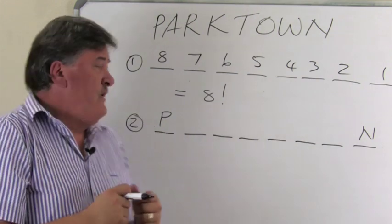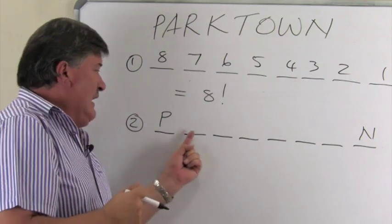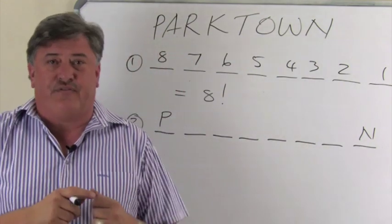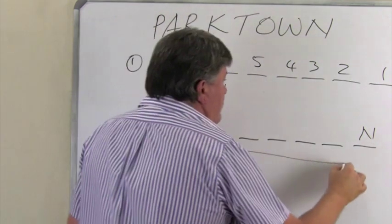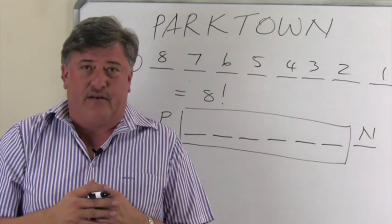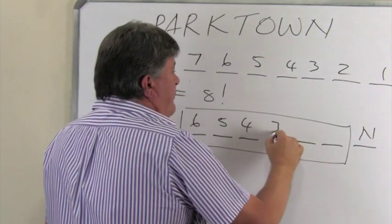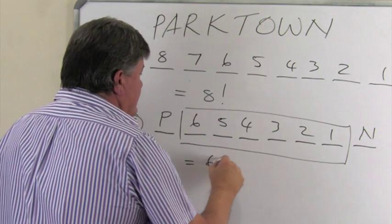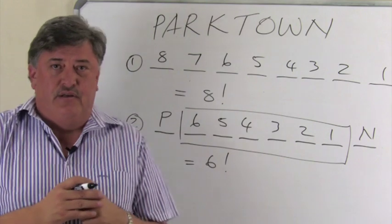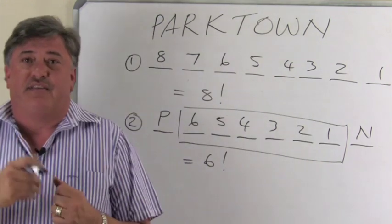Now, like we said before, once the first position is fixed and they can't repeat, this P can't be in any one of the other positions. The N can't be in any one of the other positions. So, what we're basically going to look at is only that part, because the P and the N is already fixed, already used, they can't be used again. So, how many letters are left? Only six. So, that will be six, five, four, three, two, one. So, that means six factorial number of words can be formed if P is the first letter, N is the last letter.